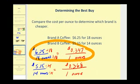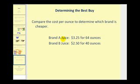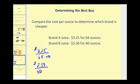Let's go ahead and take a look at another one of these. Here we're comparing two brands of juice, where the first rate is $3.25 for 64 ounces, and brand B is $2.50 per 40 ounces. So again, our unit rate would be the cost per ounce.